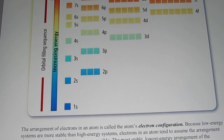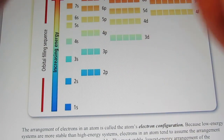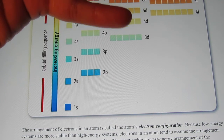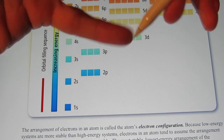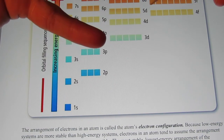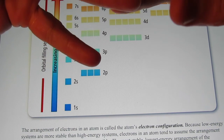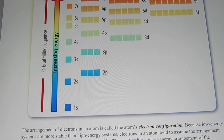Hey kiddos, we're back. We're going to continue to write electron configurations. I'm going to show you something called a noble gas configuration — it's an abbreviated way to write electron configurations. And then we're going to move into something called dot diagrams today.